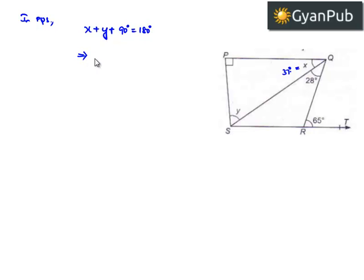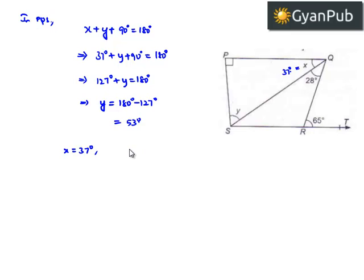Substituting X equals 37 degrees, we get 37 plus Y plus 90 equals 180 degrees. That implies 127 degrees plus Y equals 180 degrees, which means Y equals 180 minus 127 degrees, which equals 53 degrees. Therefore, X equals 37 degrees and Y equals 53 degrees.